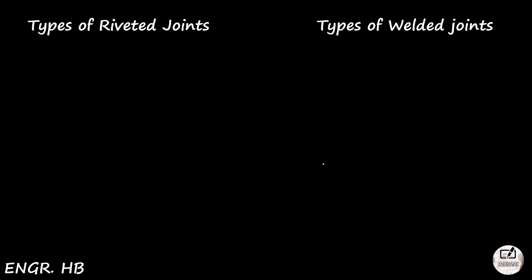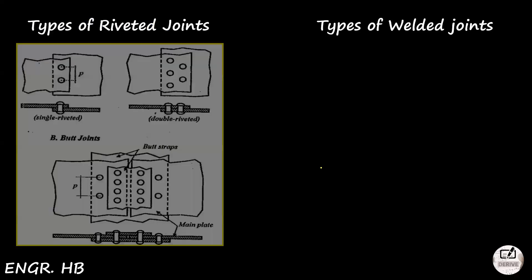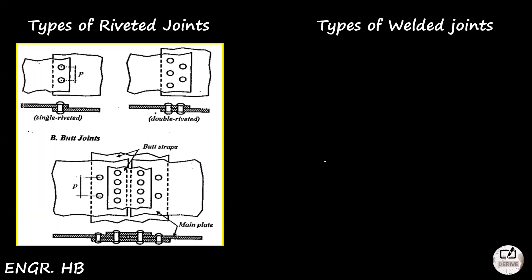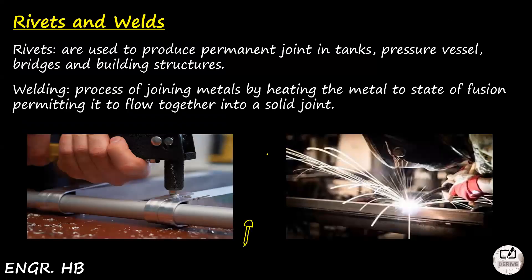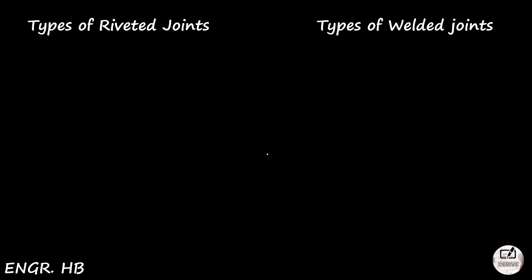So we have types of riveted joints and types of welded joints. First, the riveted joints. We have single riveted, double riveted. We also have the butt joint. The first one is lap joint, it's just not labeled. And this letter B is butt joint. As you can see, we have three plates there that are stapled by rivets. The rivets need to be that thick so they won't separate. Because as per the definitions, rivets are used to produce permanent joints.